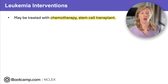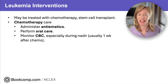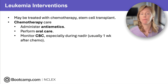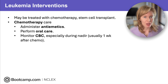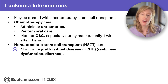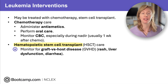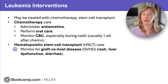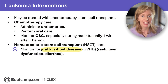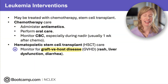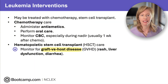Definitive treatment for leukemia is chemotherapy and/or a stem cell transplant. While undergoing chemo, address side effects by giving antiemetics, performing gentle oral care, and monitoring CBC especially during their nadir — the lowest point in neutrophil counts, which usually occurs about one week after chemotherapy. After chemotherapy has destroyed the cancerous bone marrow, the patient may undergo a hematopoietic stem cell transplant, where healthy donor stem cells are administered by IV and graft into the bone marrow to produce normal healthy cells. If those donor stem cells produce autoantibodies against the host, this creates graft-versus-host disease, causing rash, liver dysfunction, and diarrhea — monitor liver enzymes and notify the healthcare provider of any changes.